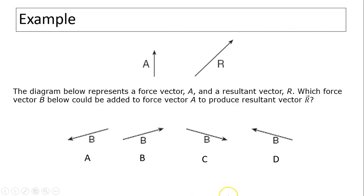Let's take a look at this example. The diagram below represents a force vector a and a resultant vector r. Which force vector b below could be added to force vector a to produce the resultant r? So which b gives a plus b equals r?